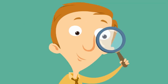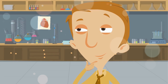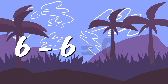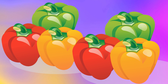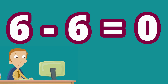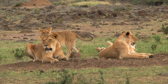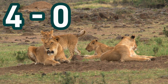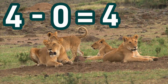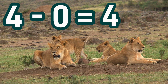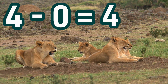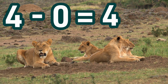You've done an awesome job. Now I want to see how many of these you know. What is six minus six? Yeah, zero. If you have six and then take all six of them away, there are none left. Six minus six equals zero. How about four minus zero? If you're subtracting zero, you started with four and took nothing away, so you still have four. Four minus zero equals four.